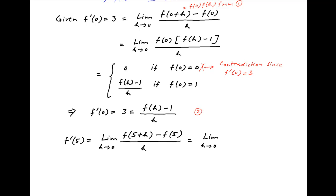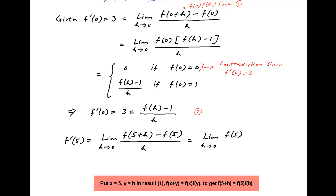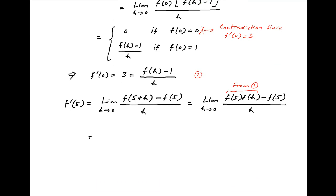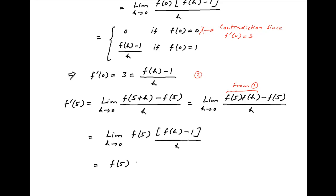This is equal to the limit as h tends to 0 of f(5+h) - f(5), all divided by h. Using result 1, f(5+h) = f(5)·f(h), so this becomes f(5)·f(h) - f(5) divided by h, which equals the limit as h tends to 0 of f(5)·[f(h) - 1] / h. This equals f(5) times the limit as h tends to 0 of [f(h) - 1] / h.